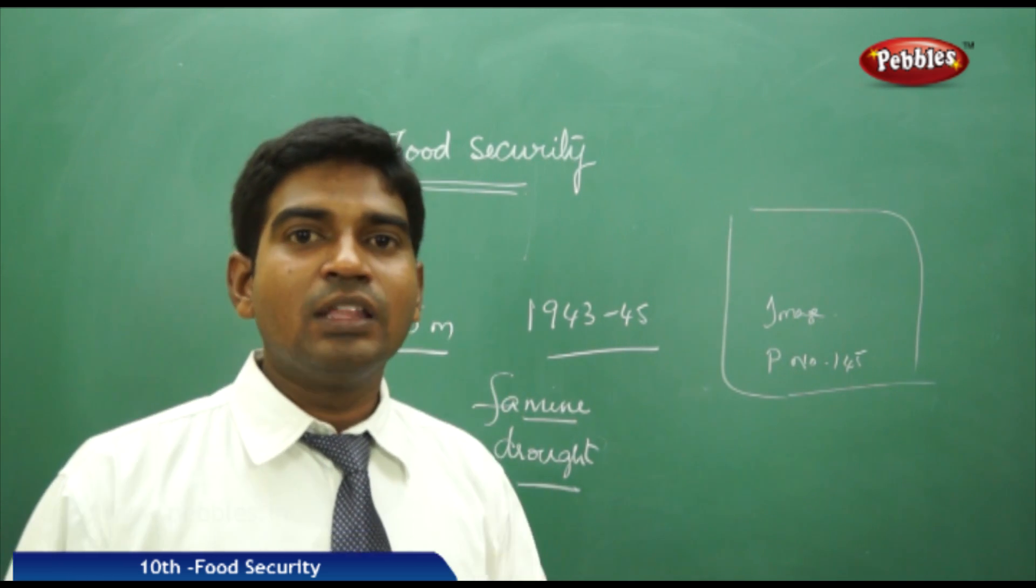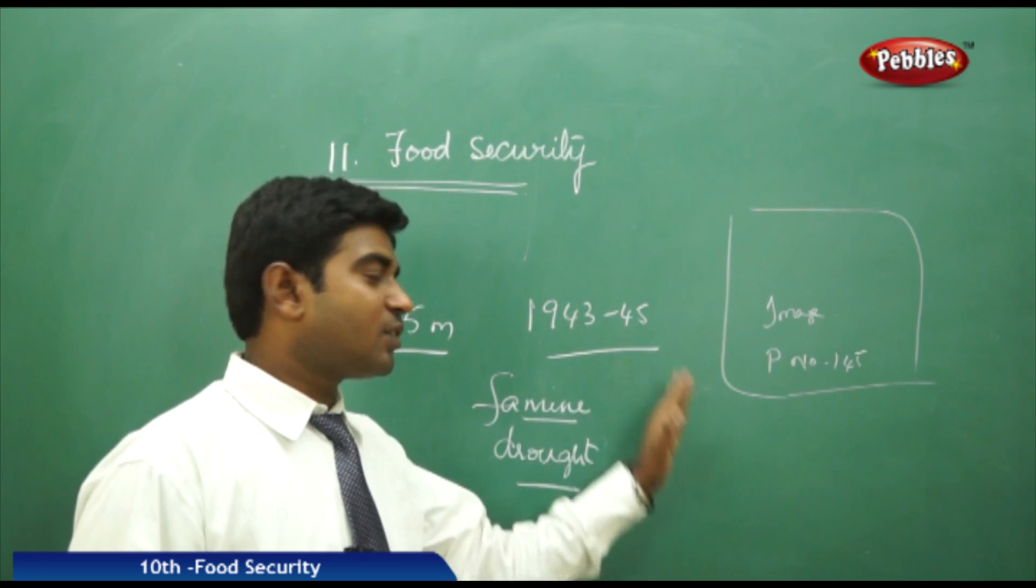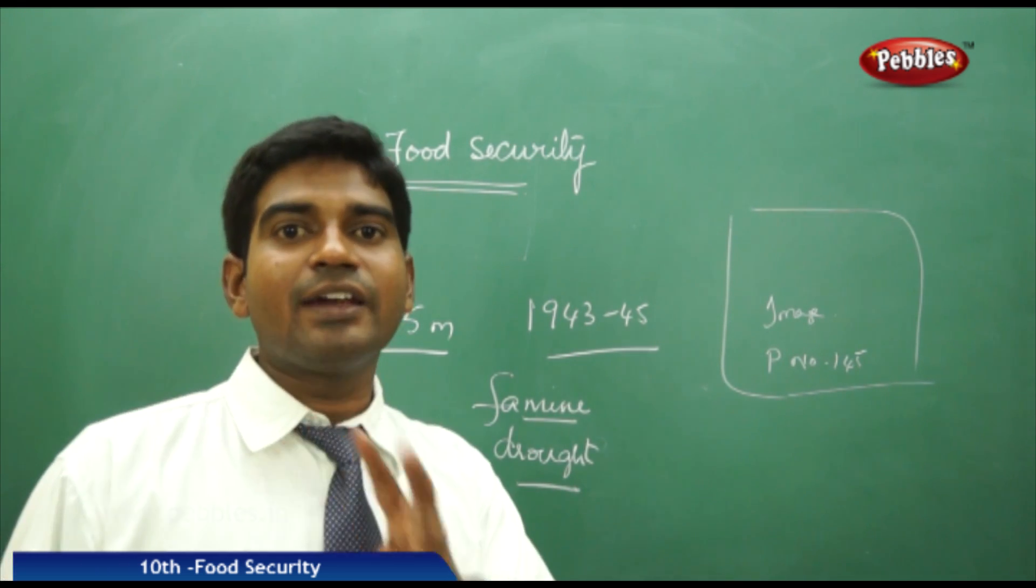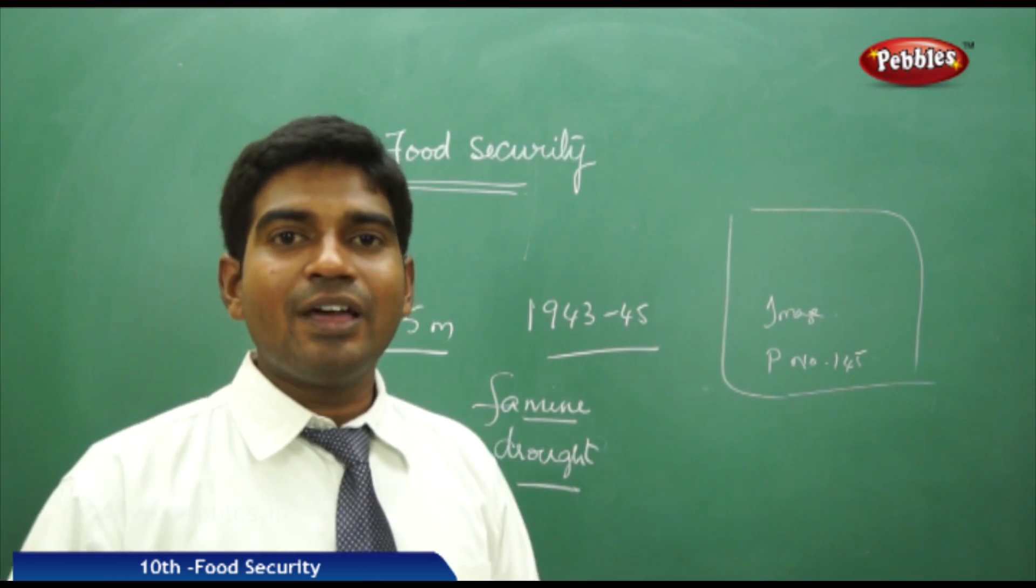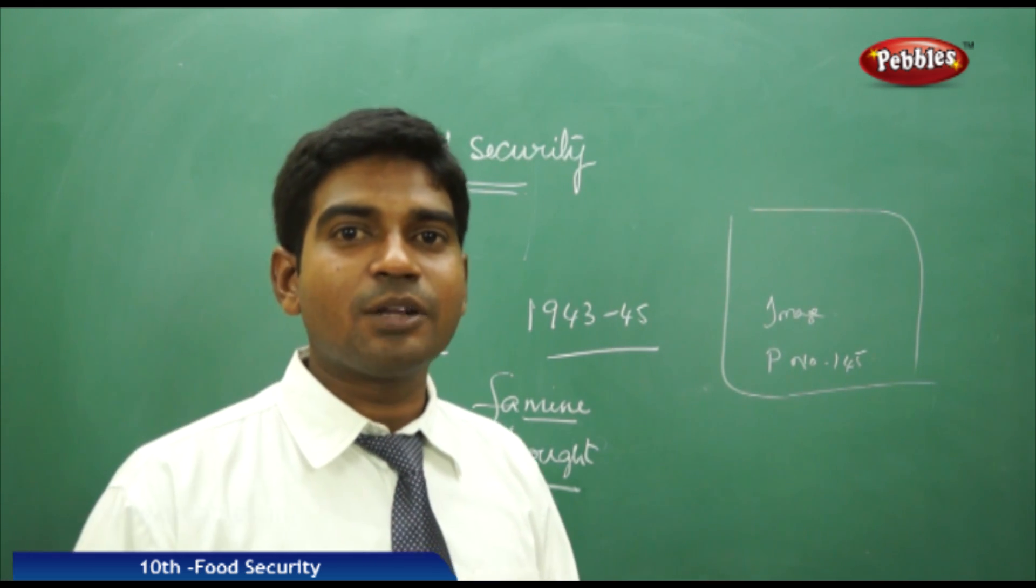This is the scenario in 1943-45. What would be the factors that led to this kind of situation? We had the rulers - the Britishers at that time. We didn't have our democratic setup or our own rulers to look after or address the issues.